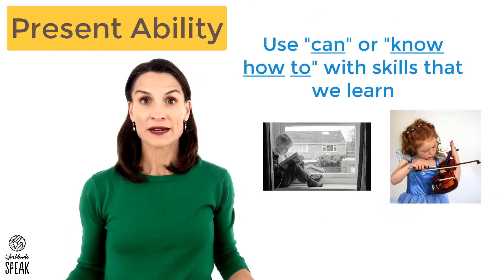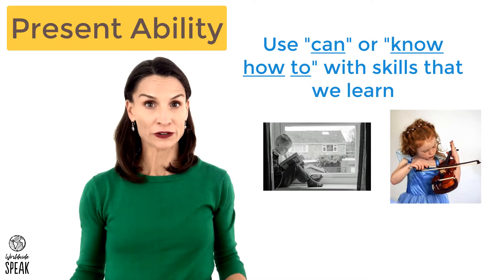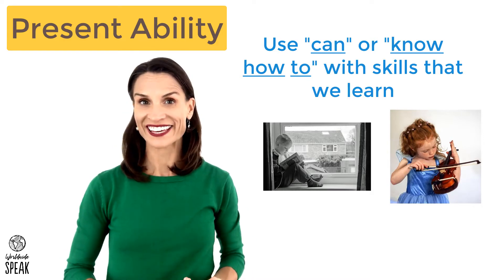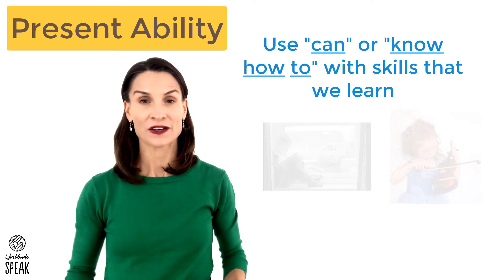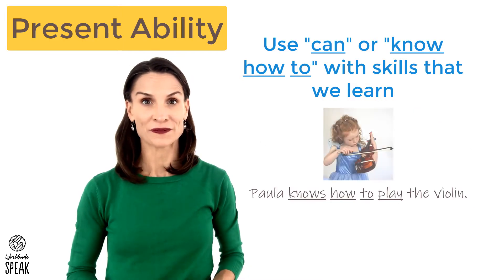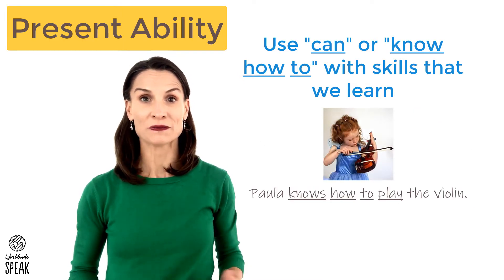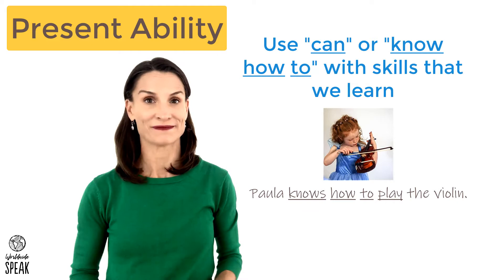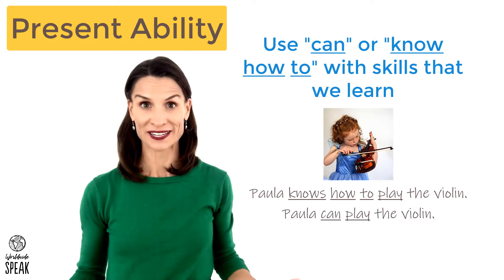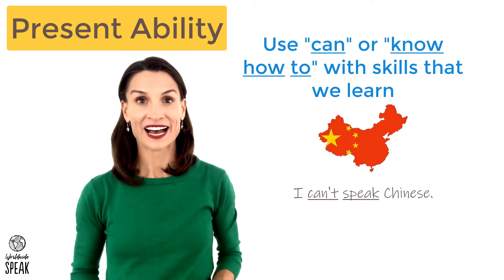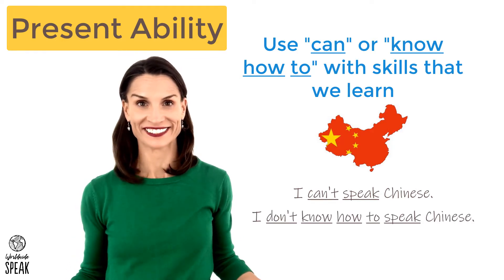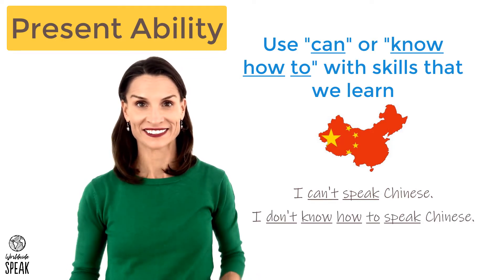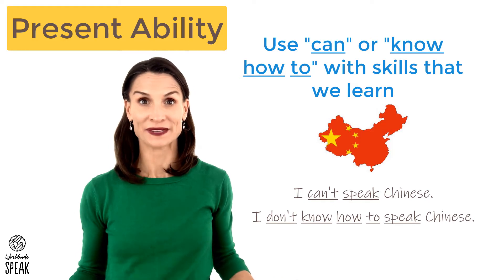If we are talking about skills that we learn, we can use can or know how to. For example, Paula knows how to play the violin, or Paula can play the violin. I can't speak Chinese — I don't know how to speak Chinese. Those have the same meaning.